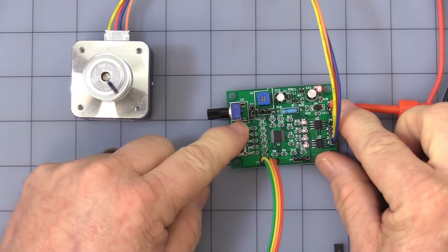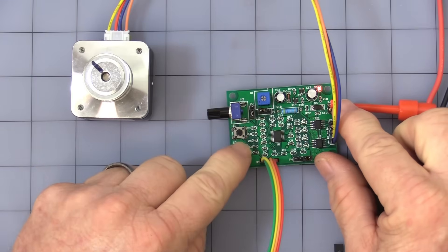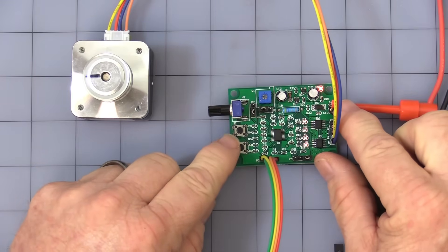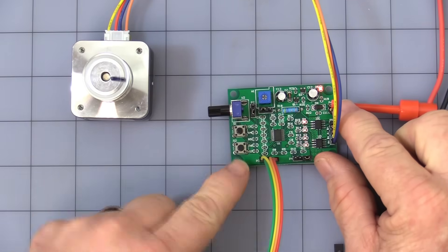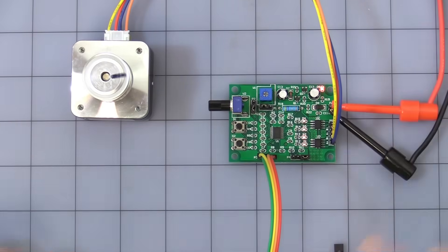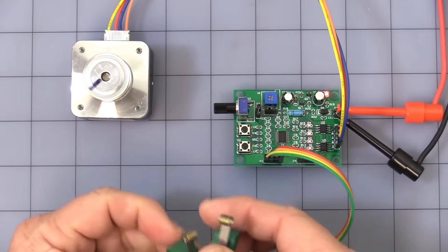Switch one, on and off clockwise. Switch two is on and off counterclockwise. There again, let's use the limit switches. It's slightly different.